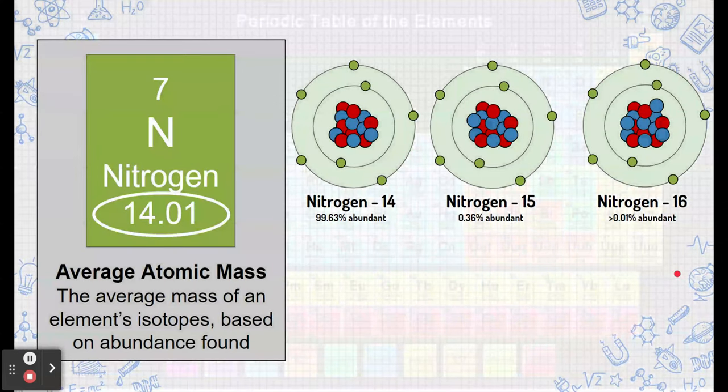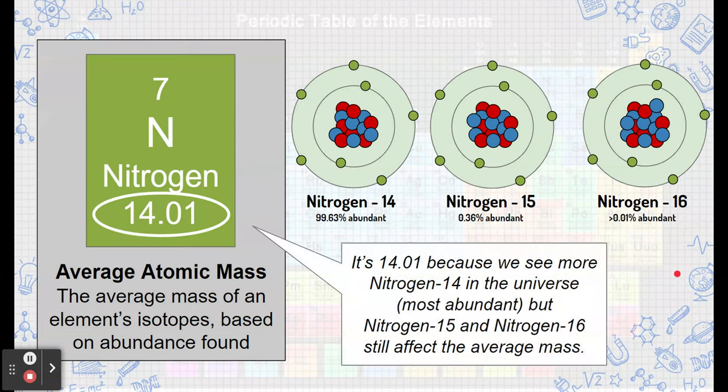So again, going back to the average atomic mass on the periodic table, if we look at this number here, what we're seeing is an average. And what it's saying is this. Nitrogen's average atomic mass is 14.01.